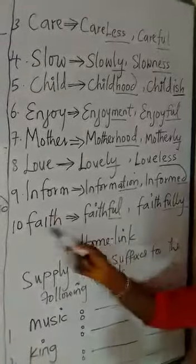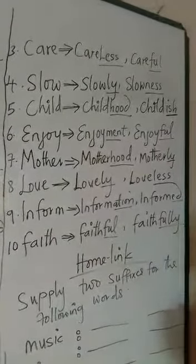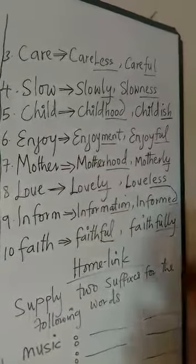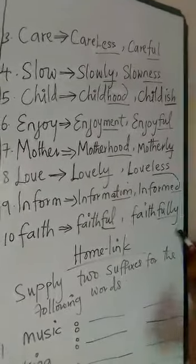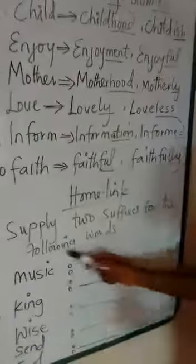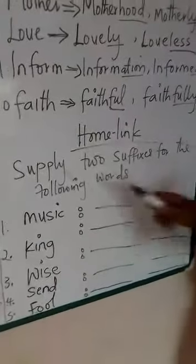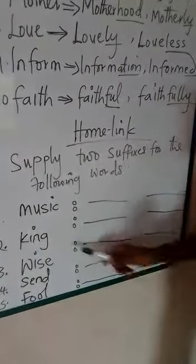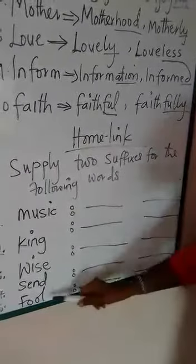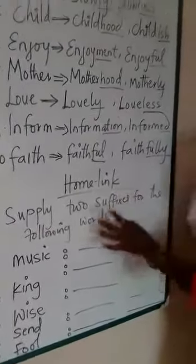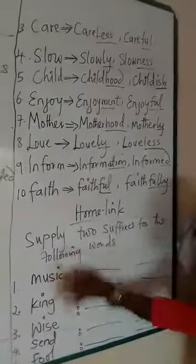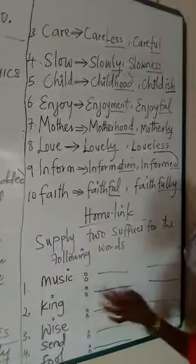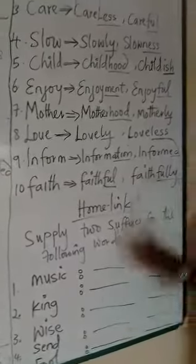The last one is 'faith', giving us 'faithful' — the suffix there is F-U-L. And 'faithfully' — the suffix is F-U-L-L-Y. Now, the task says: supply two suffixes for the following words. Say after me: supply two suffixes for the following words. We have music, king, wise, saint, lord, and fool. I need you to supply the suffixes for each of the words written here.